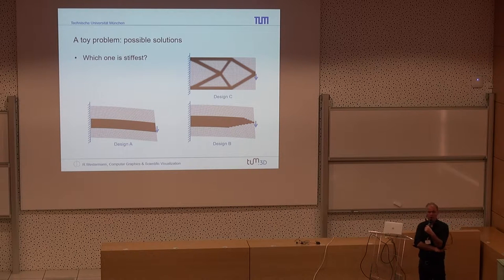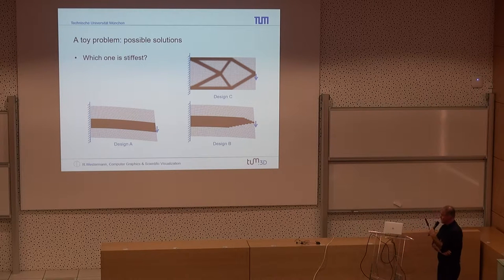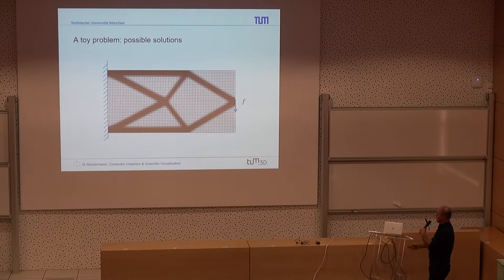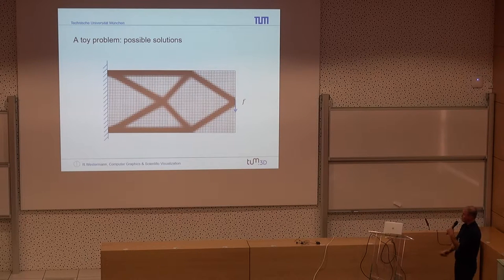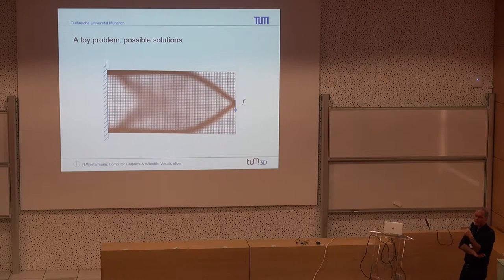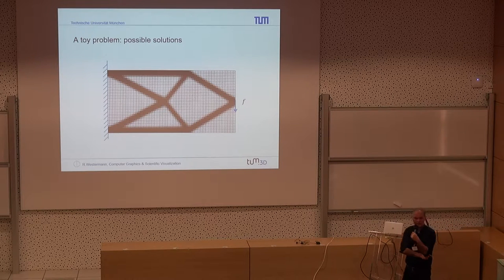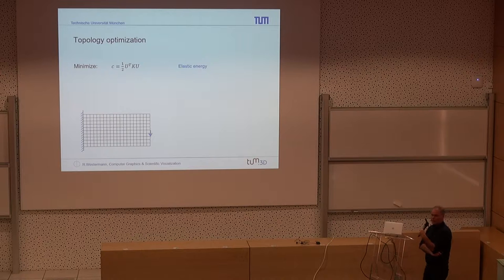Topology optimization tries to optimize the topology of a given shape in such a way that it is most resistant to particular forces induced externally. The topology optimization process is visualized here: starting with some initial design, the internal topology is evolved automatically to the stiffest topology, based on the internal mechanics of the topology optimization process.